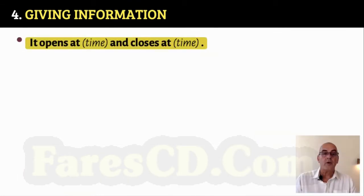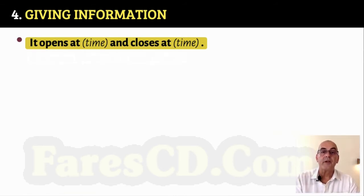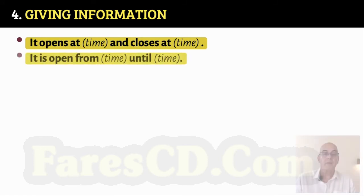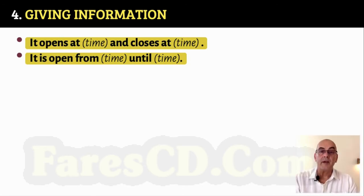It opens at [time] and closes at [time]. For example: It opens at 8am and closes at 10pm. It is open from [time] until [time]. For example: It is open from 7am until 11pm.